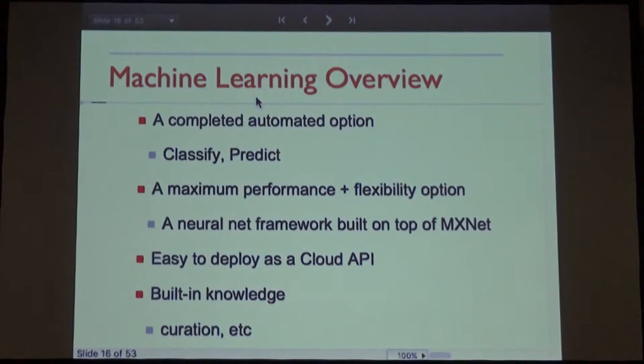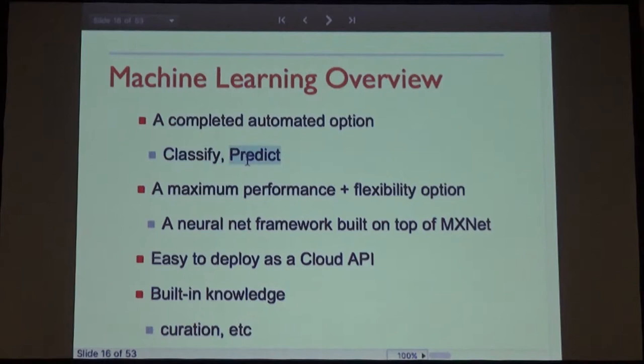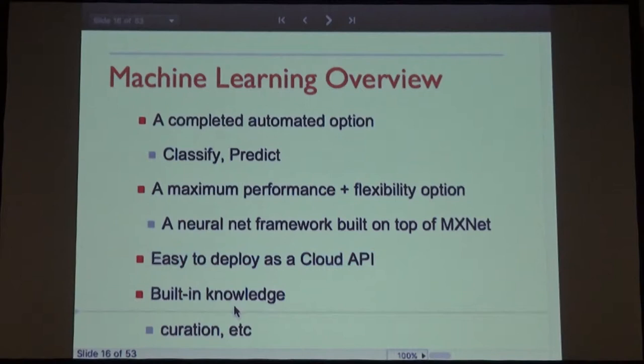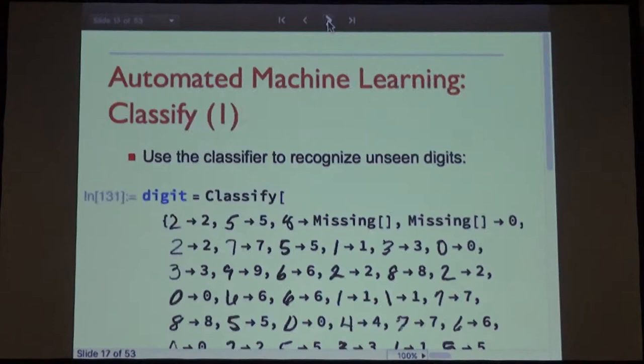Machine learning — this is more my domain. Our philosophy is to offer a few different options. One is completely automated machine learning, which has been a major research area — classify and predict are two examples. We also want maximum performance for those who want to train on multiple GPUs. We make it very easy to deploy things as cloud APIs. And we have huge amounts of built-in knowledge, which also relates to the automation.